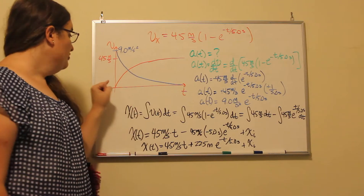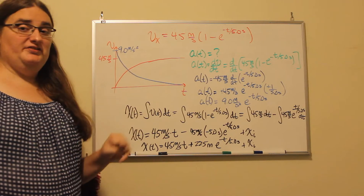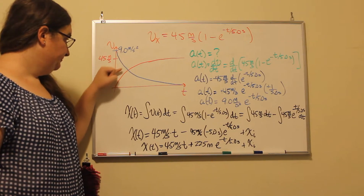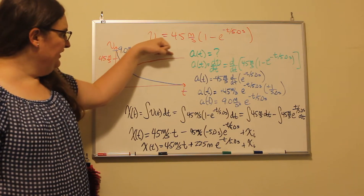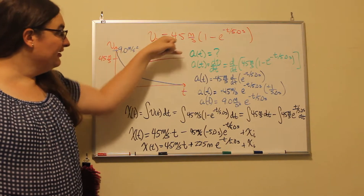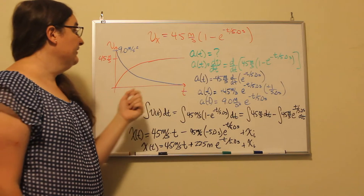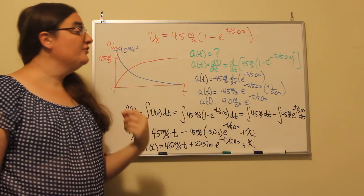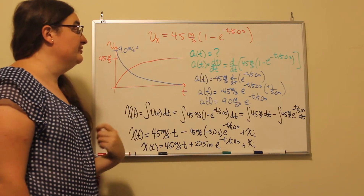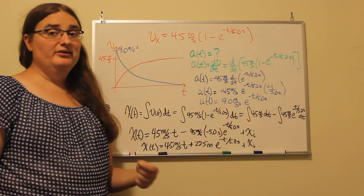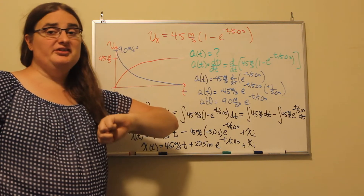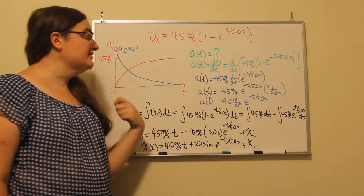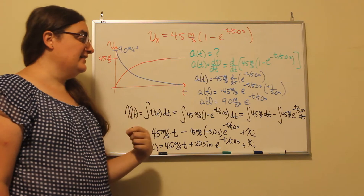If I were to graph velocity as a function of time, we're starting at 0 and asymptotically leveling off at a maximum value of 45 meters per second. For acceleration, the acceleration is the derivative of velocity with respect to time.